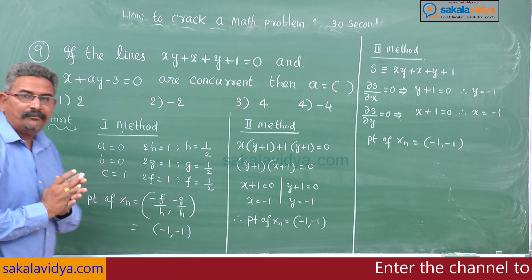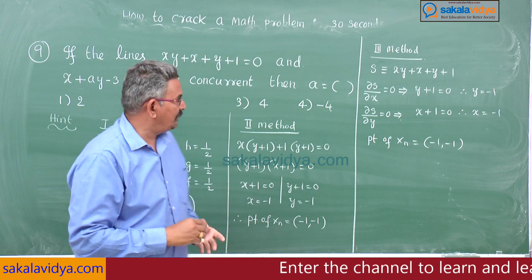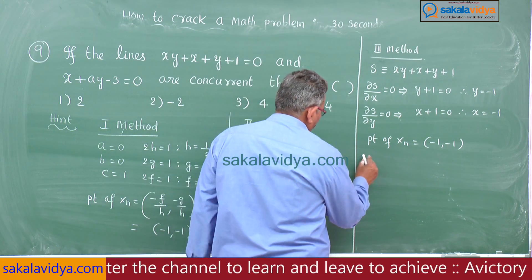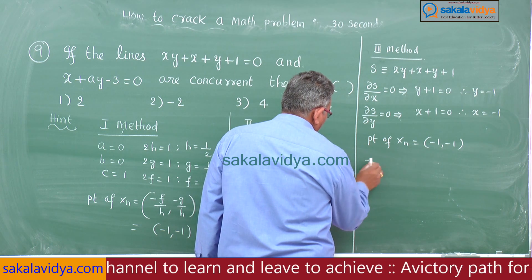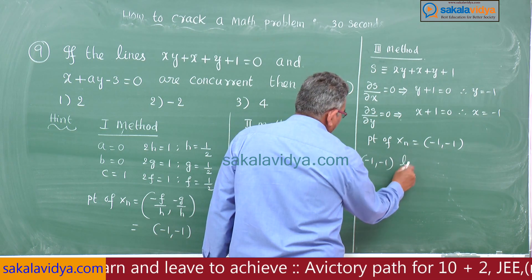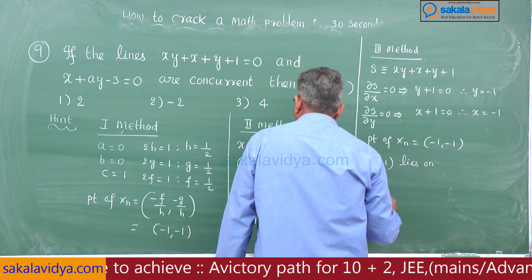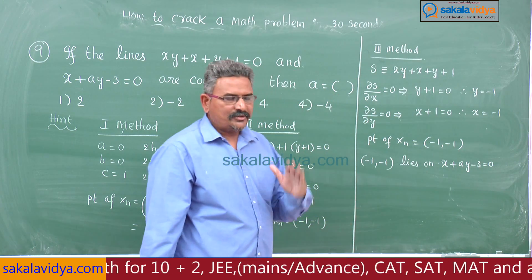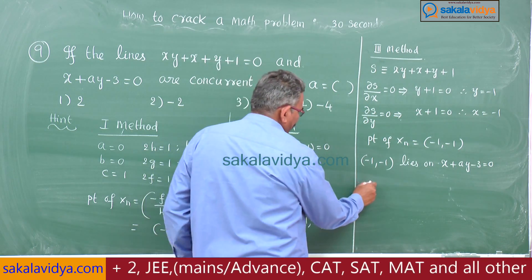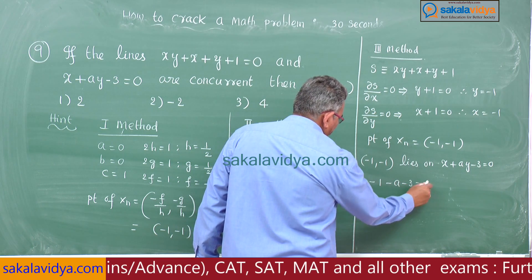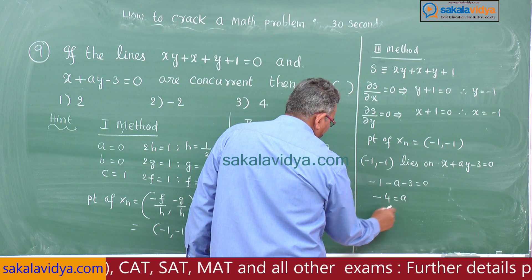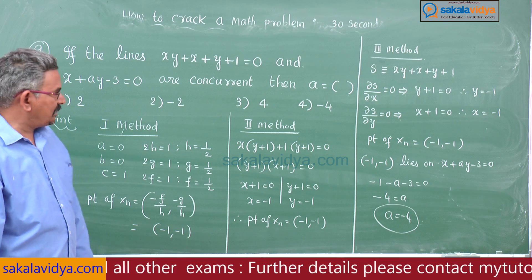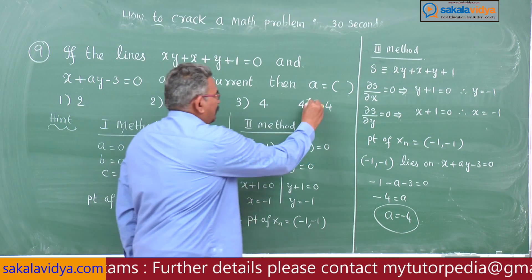Our aim is to determine the value of a. The point (-1, -1) lies on the line x + ay - 3 = 0. Substituting: -1 + a(-1) - 3 = 0, giving -1 - a - 3 = 0, so -4 = a, therefore a = -4. The fourth option is the correct answer.